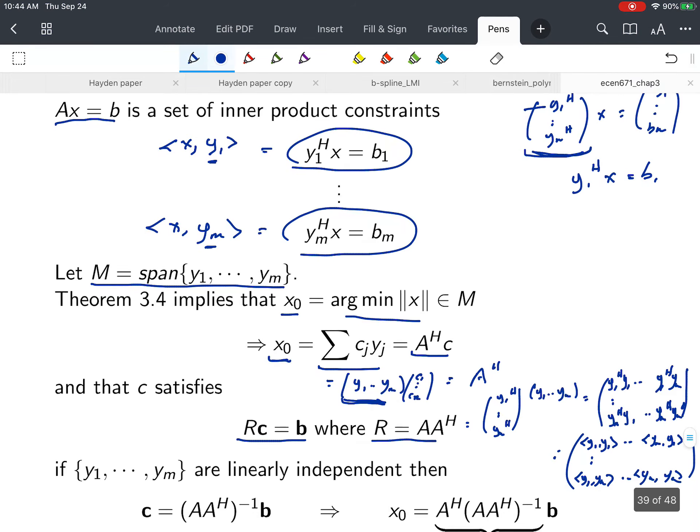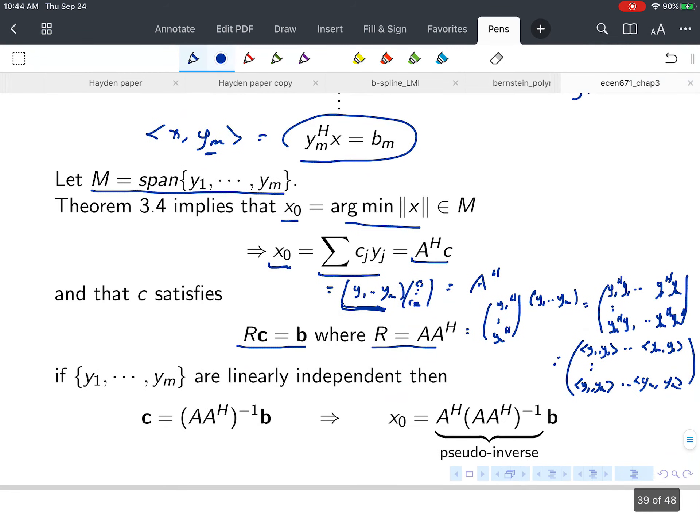The Grammian can be written as AA^H. If y₁ through y_m are linearly independent, then R is full rank as we showed before, and we can invert R.